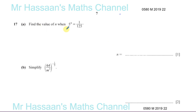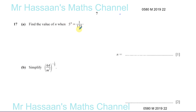So part A says: find the value of n when 5 to the power of n equals 1 over 125. Now in all of these questions with indices, this is called an exponential equation. What you'll notice is you'll be able to make the numbers on both sides of the equation expressed with the same base.